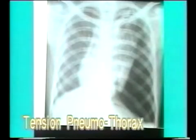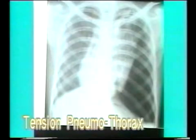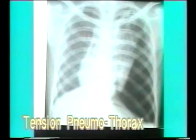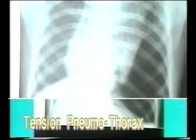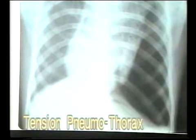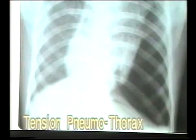This is one more X-ray of tension pneumothorax. Note the radiolucency over the entire left hemithorax, complete collapse of the left lung and signs of high pressure in the left pleural sac — that is, the mediastinum is shifted to the opposite side compressing the opposite lung. The diaphragm is pushed downwards and flattened and the intercostal spaces are wider. This is tension pneumothorax.